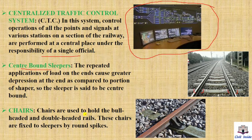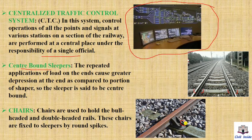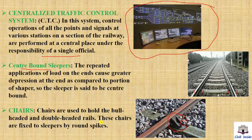Next, chair. Chairs are used to hold the bull-headed and double-headed rails. These chairs are fixed to the sleepers by round spikes. This piece holds the bull-headed rails in position — that is our chair.